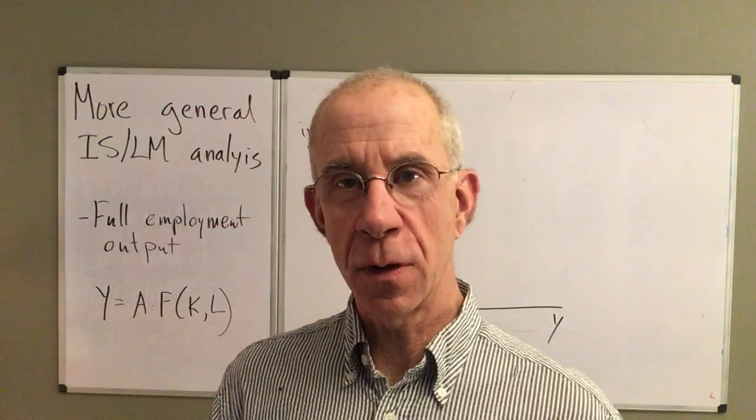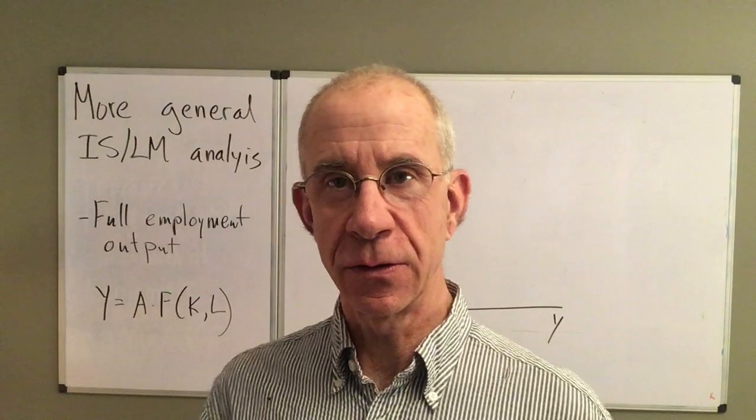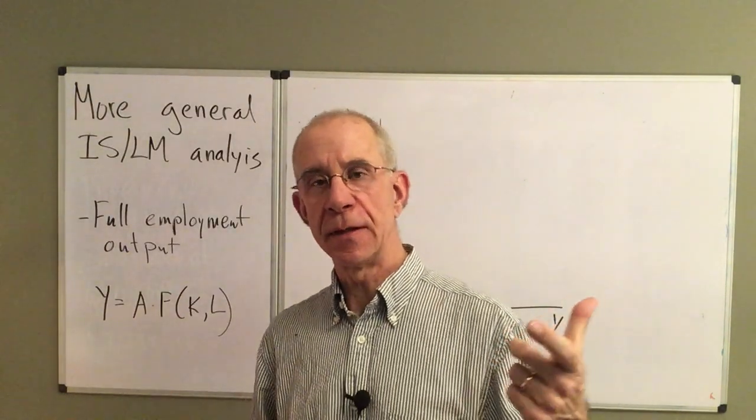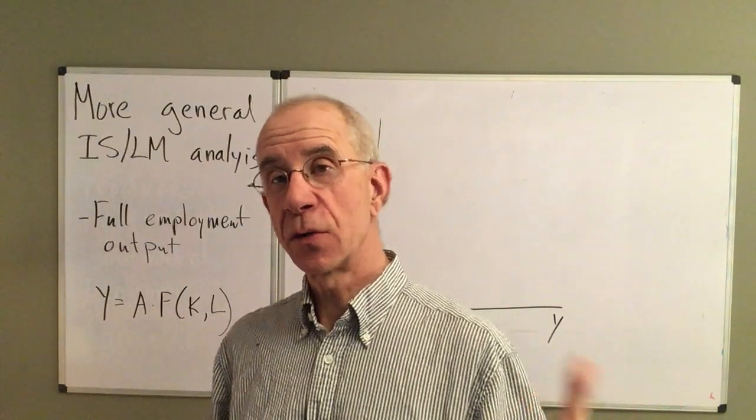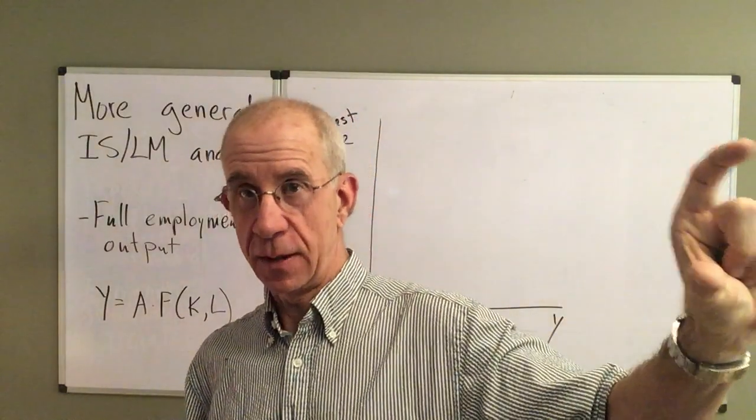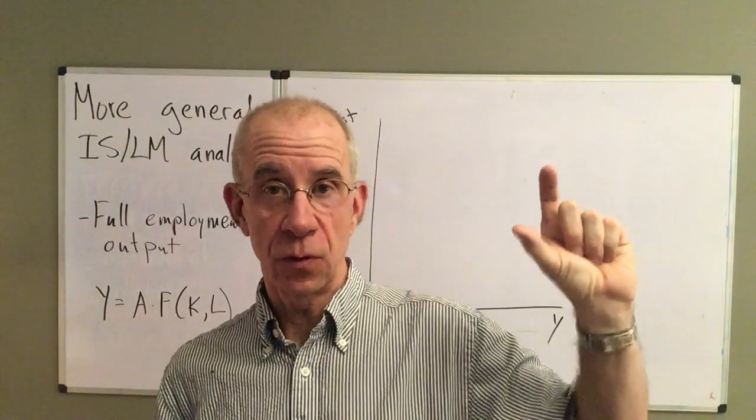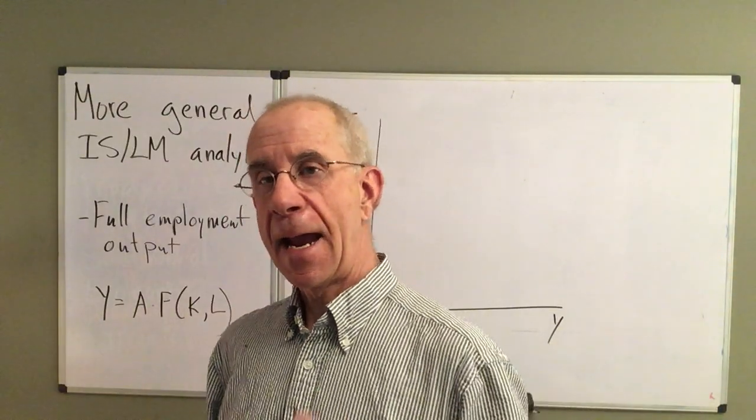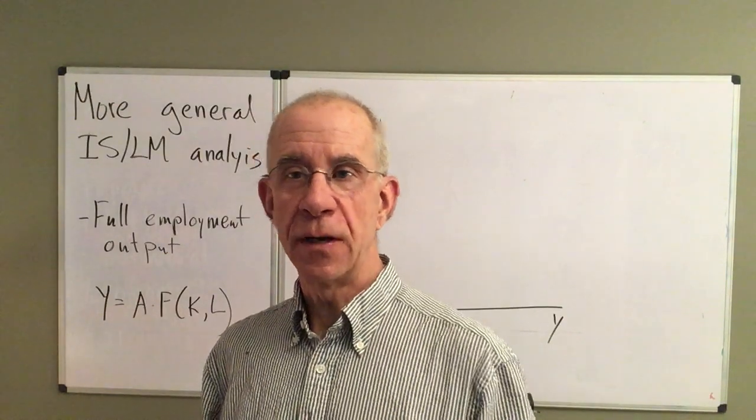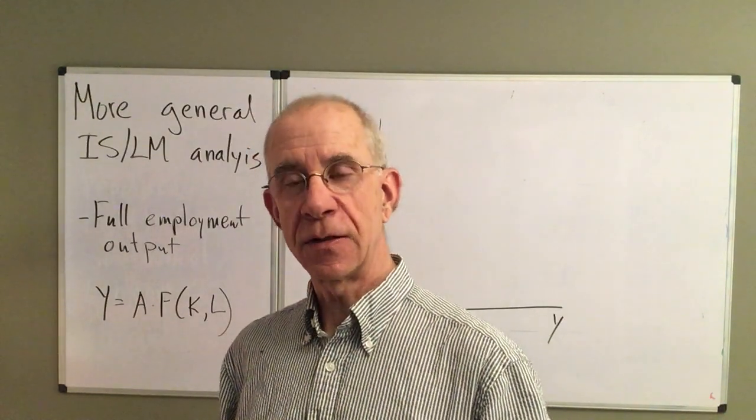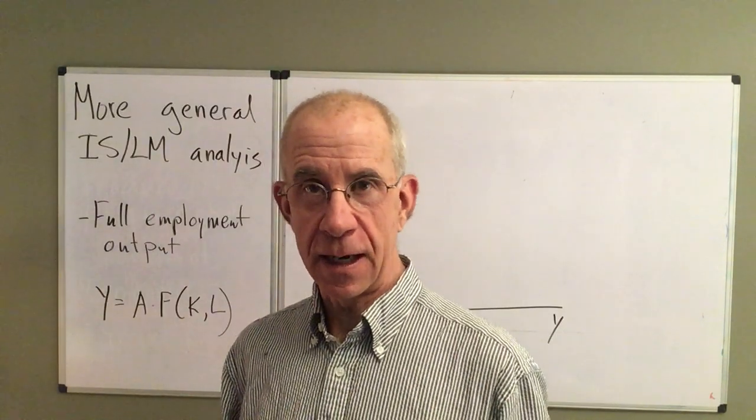Let's add a little bit more context and texture into the IS-LM framework. If you recall, the IS-LM framework looks at the goods market equilibrium - combinations of interest rate and output to give you goods market equilibrium. That's the IS curve, and then the LM curve, which gives you the interest rates and output such that the money market is in equilibrium.